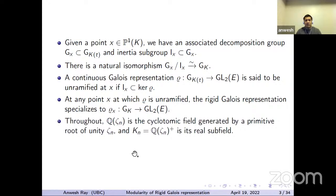A little more notation: zeta_N is going to be a primitive N-th root of unity, and K(N) is going to be the real subfield of Q(zeta_N).